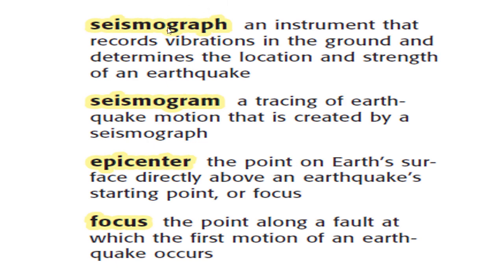Here is a review of key vocabulary: a seismograph is an instrument that records vibrations in the ground to determine the location and strength of an earthquake. A seismogram is a tracing of earthquake motion created by a seismograph. The epicenter is the point on the earth's surface directly above an earthquake's starting point, or focus. The focus is the point along a fault at which the first motion of an earthquake occurs.